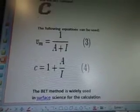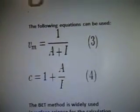And there's another equation for you to look at. The value of the slope A and the y-intercept I of the line are used to calculate the monolayer adsorbed gas quantity Vm or Um, I don't know what that means, and the BET constant C. The following equations can be used, 3 and 4.